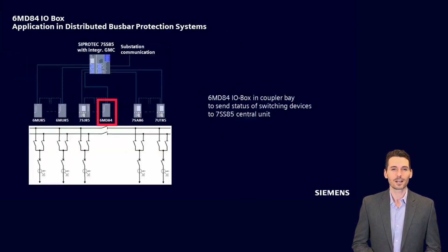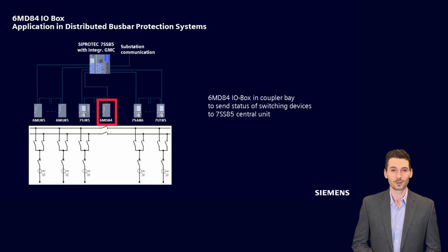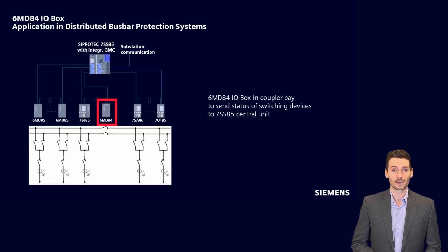In the application Switch Controller and Bus Bar Protection System, the 6MD84 IO Box is sending the positions of the disconnectors to the bus bar protection central unit 7SS85CU via the protocol IEC 61850-9-2. This is applicable for bays without CTs, such as a bus bar coupler.